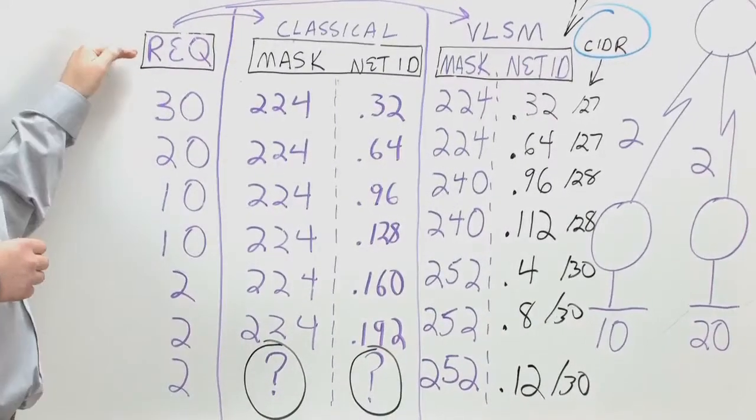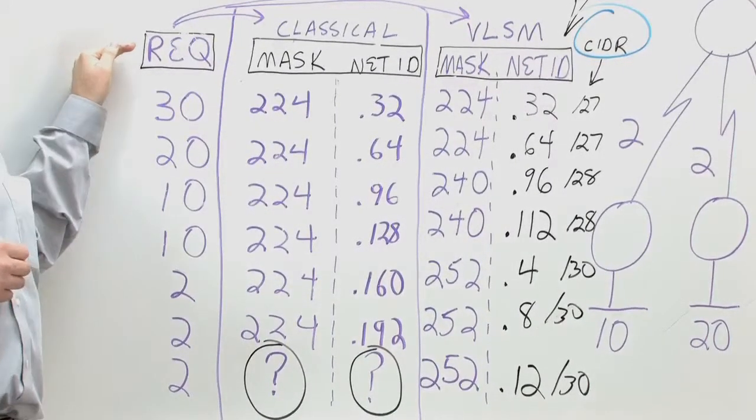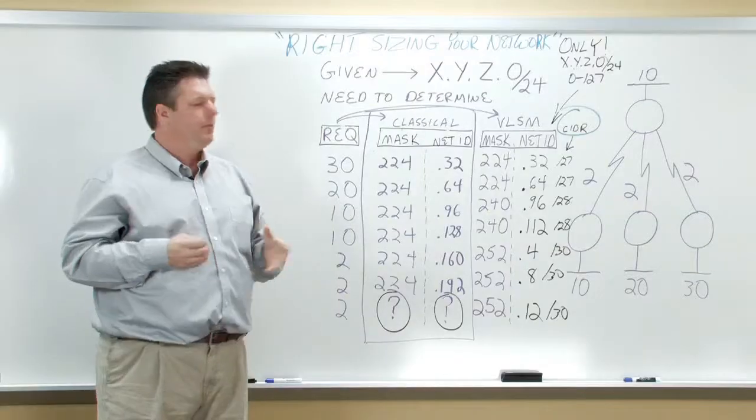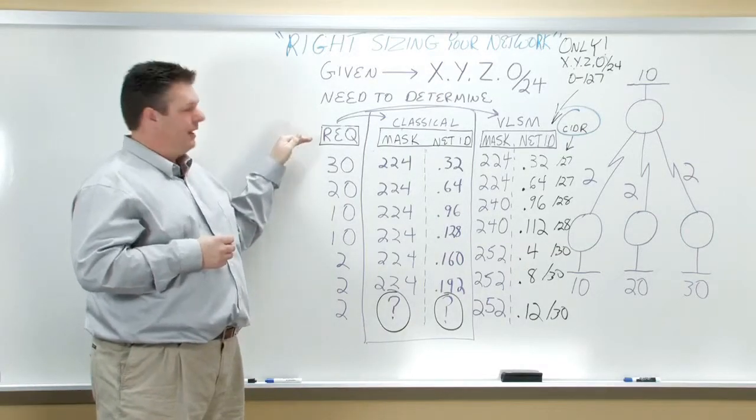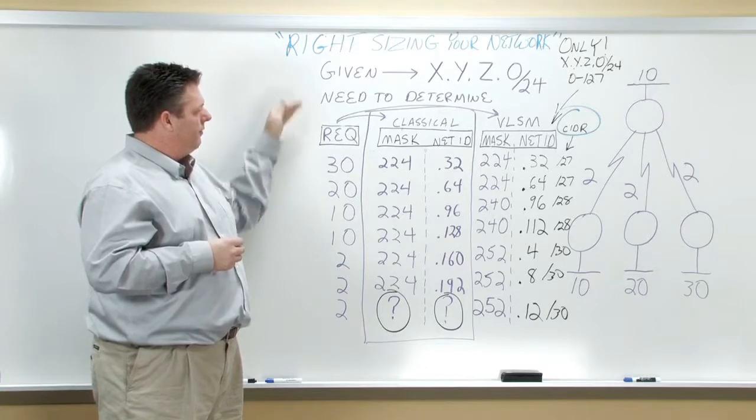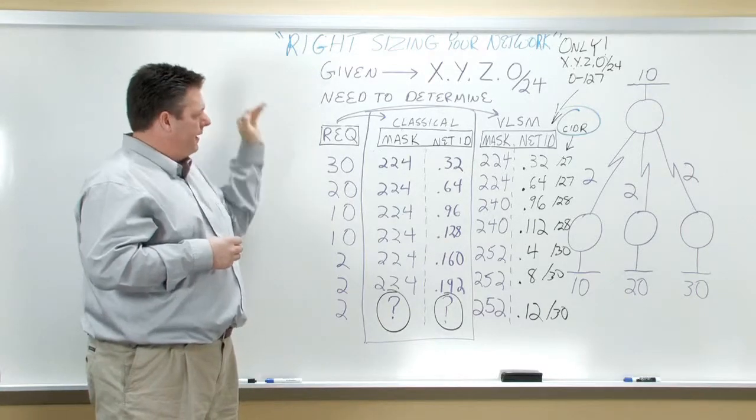and when you're doing subnetting and trying to teach your students subnetting, we break it down into three pieces. That is, take what you're given, but then take your requirements, define your requirements, and then solve for your mask and your network ID.